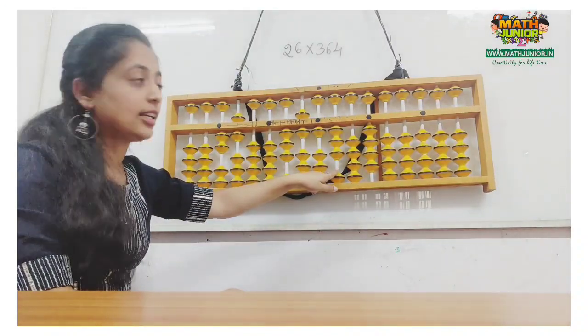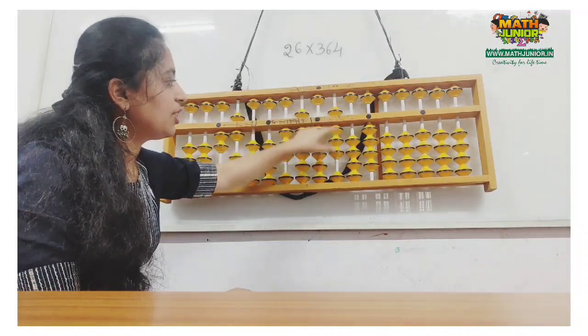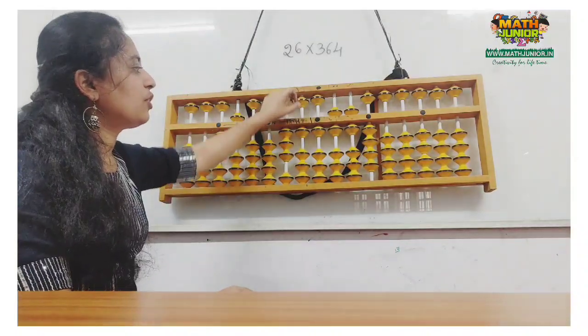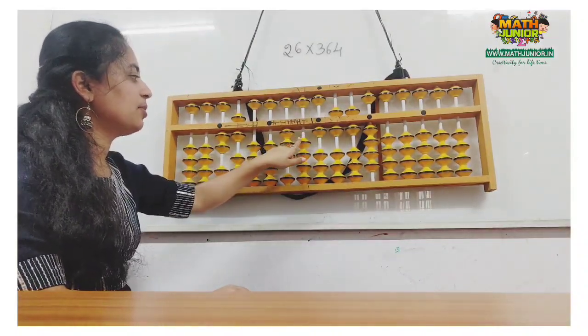I cannot add 30 directly. So, plus 50 minus 20 and add 6 directly. So, the work with 6 is done. I remove 6 from here.